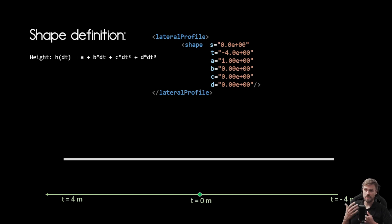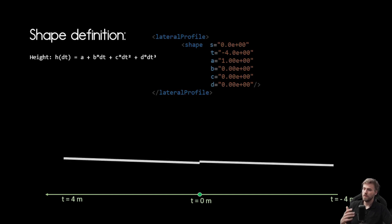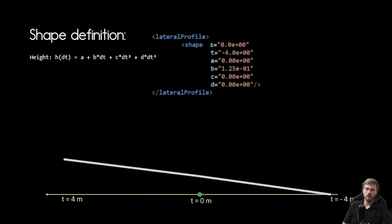Obviously just having a constant height is not going to be enough so we can also apply a constant ascent or descent like in the example here where we change the parameter B. If you want to combine that with a height offset you can adapt parameter A and B and then it would look similar with a height offset.